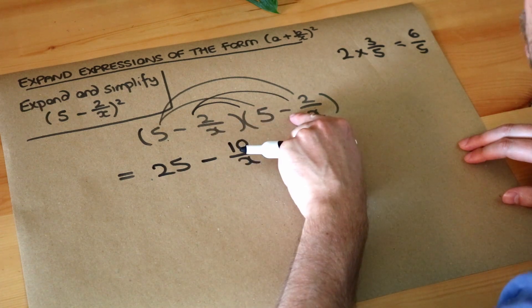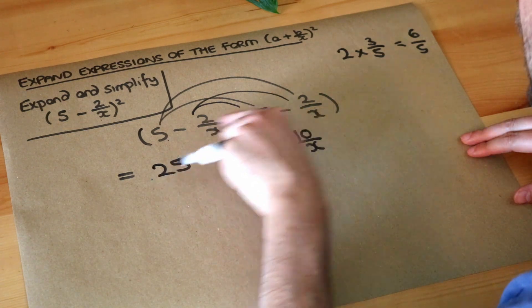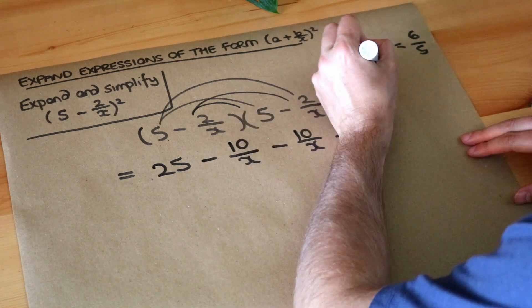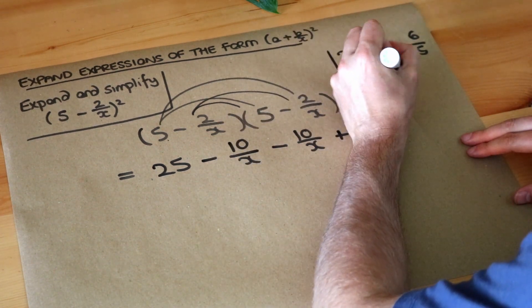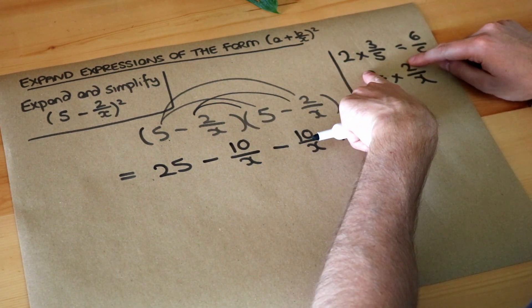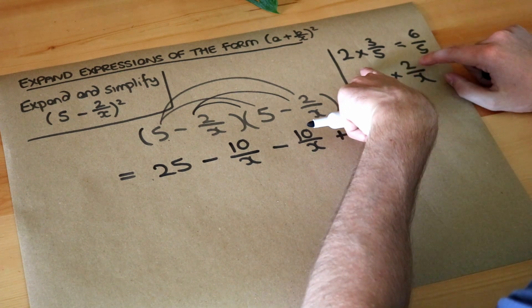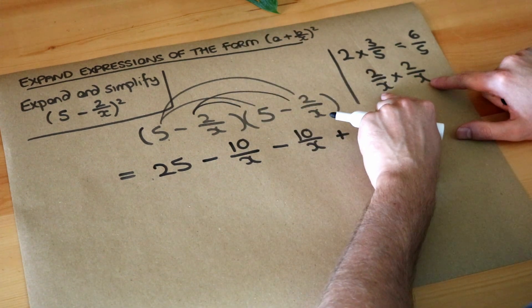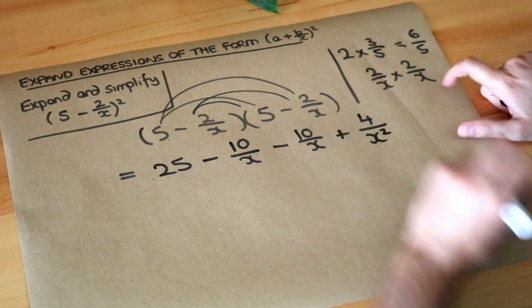And then finally we've got negative 2 over x times negative 2 over x. Negative times negative is positive. Now this time we've got 2 over x times 2 over x, a fraction multiplied by a fraction, so we just multiply the numerators and multiply the denominators. So 2 times 2 is 4 and x times x is x squared, so we've now got this.